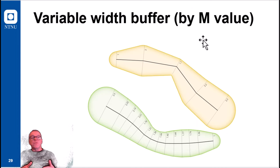And the measure could be the width of the river or the width of the flood zone, for instance. And you could then buffer the line based on the M value which is stored with the vertices. So also a cool thing.